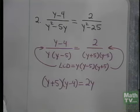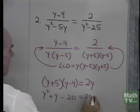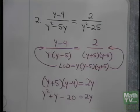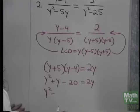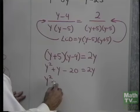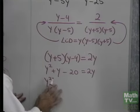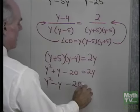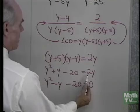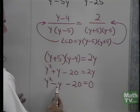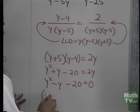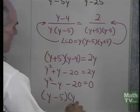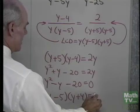Now I need to put this equation in standard form. So let's see, we have y squared plus y minus 20 is equal to 2y. I'll add negative 2y to both sides and have y squared minus y minus 20 is equal to 0. When I add negative 2y to both sides over here, I'll end up with a negative y. Now I factor: y minus 5, y plus 4 is equal to 0.